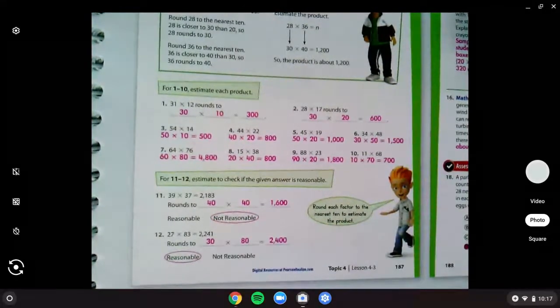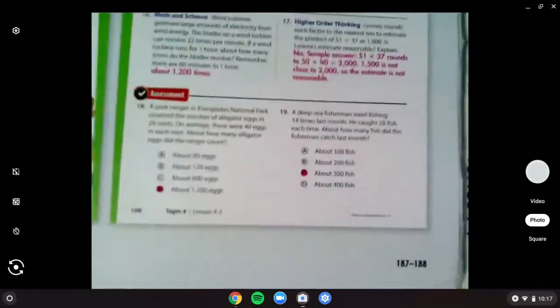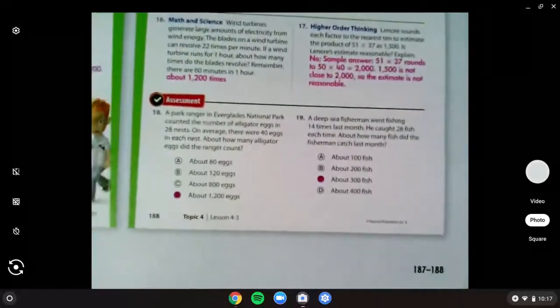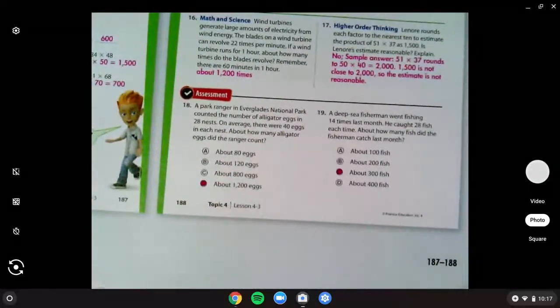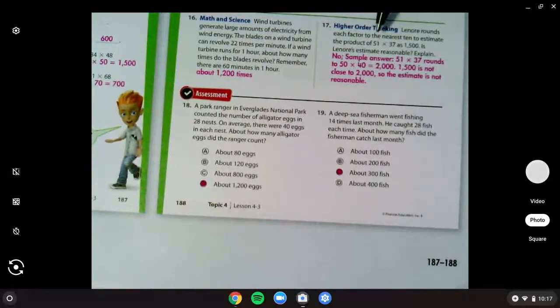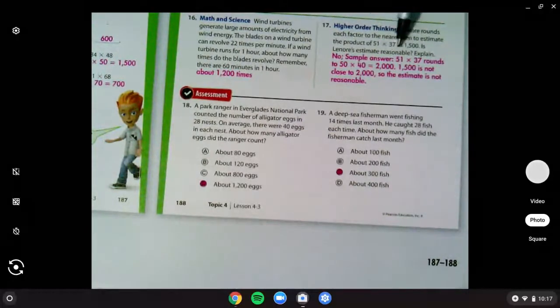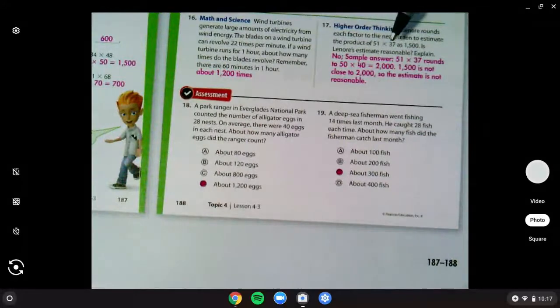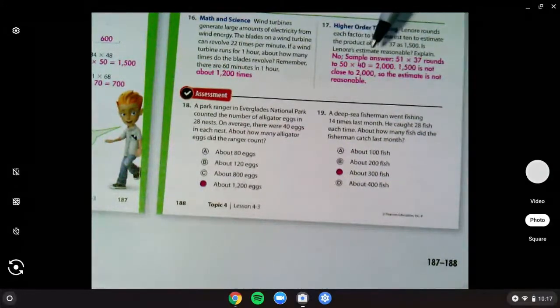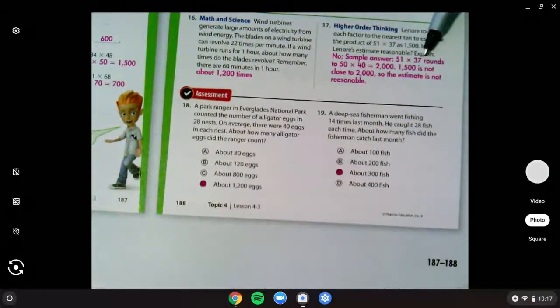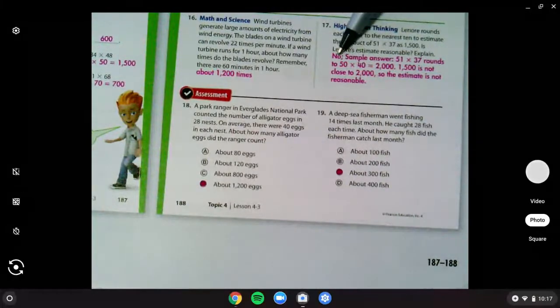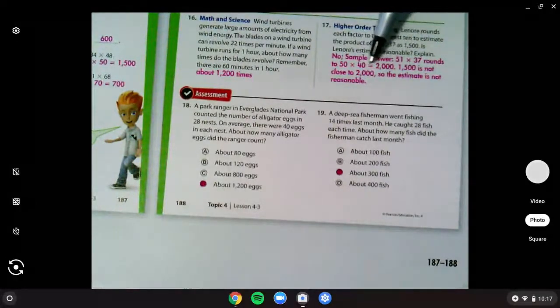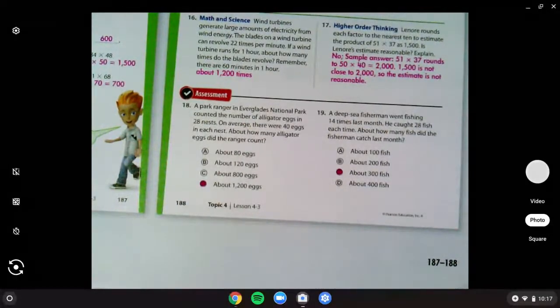On the back, you had three problems, 17, 18, and 19. 17 wanted to know if his estimate is reasonable, so it's a lot like number 11. And you should have found no, because 51 and 37 would round to 50 and 40, and if we multiply those rounded numbers together, we get 2000. And 1500 is not too close to 2000, so it's not reasonable.